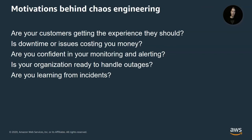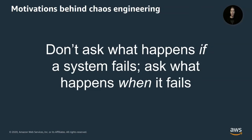Every time there is an incident, we have a huge opportunity to learn about the conditions that led to it. Chaos engineering is a great way to learn from incidents in a controlled manner. And that brings us to perhaps the greatest motivation: don't ask what happens if a system fails — ask what happens when it fails. A resilient system isn't one that does not fail, but one that maintains an acceptable level of service in the face of failure. Chaos engineering helps us reveal that.